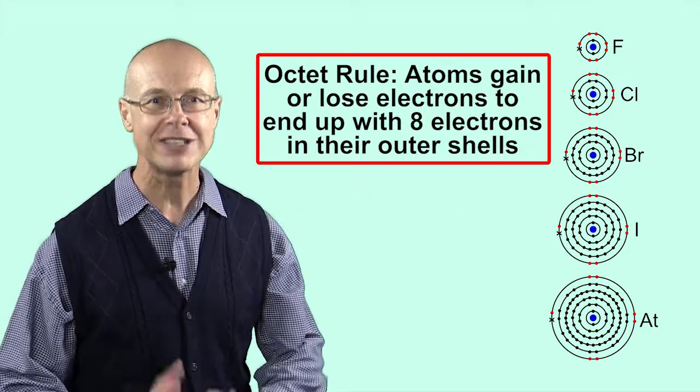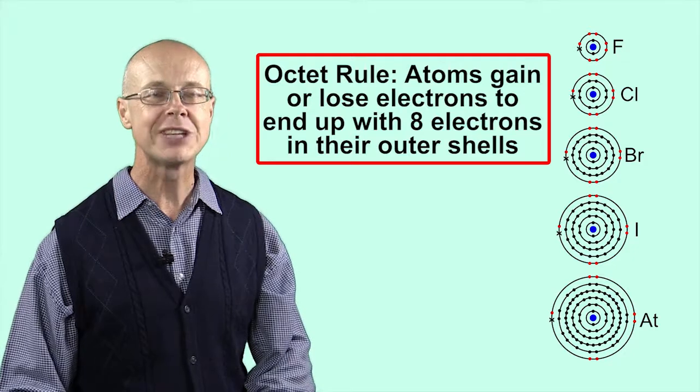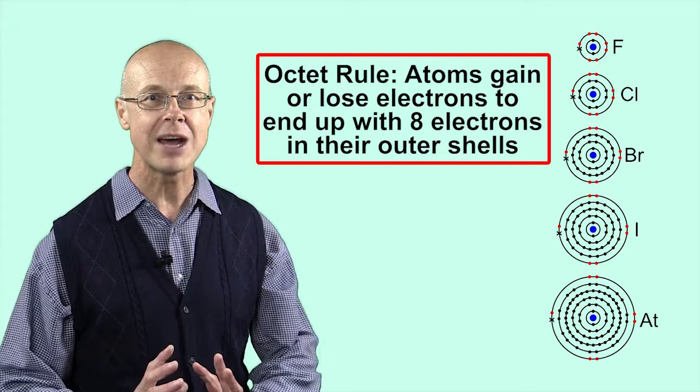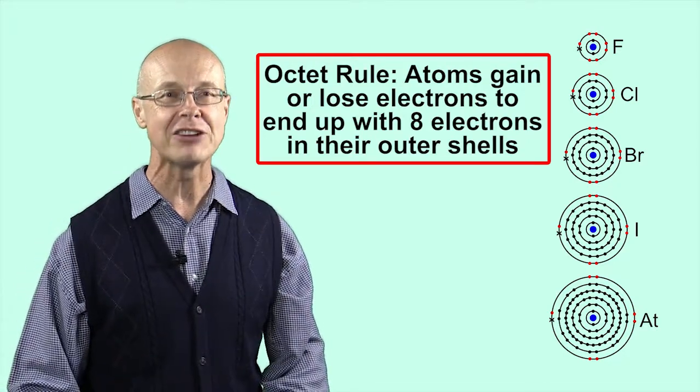This is known as the octet rule. Atoms will tend to undergo chemical reactions to gain or lose electrons, so that they end up with eight electrons in their outer shells.